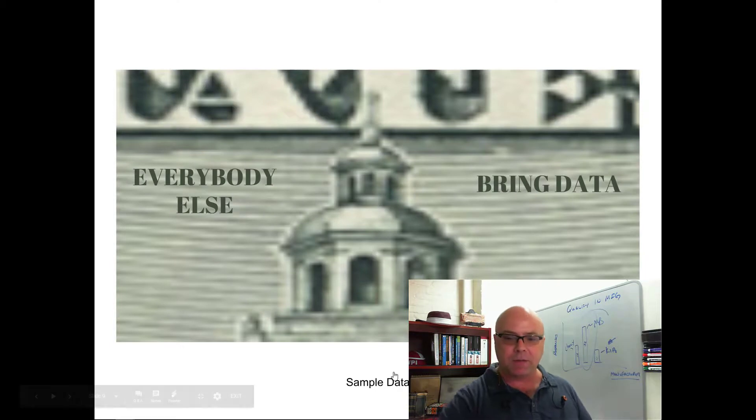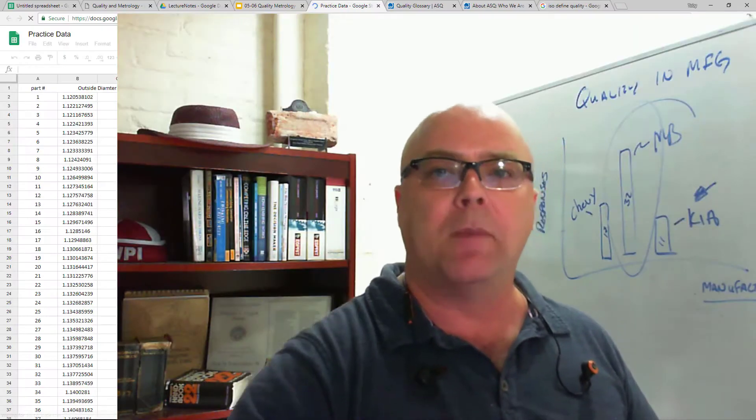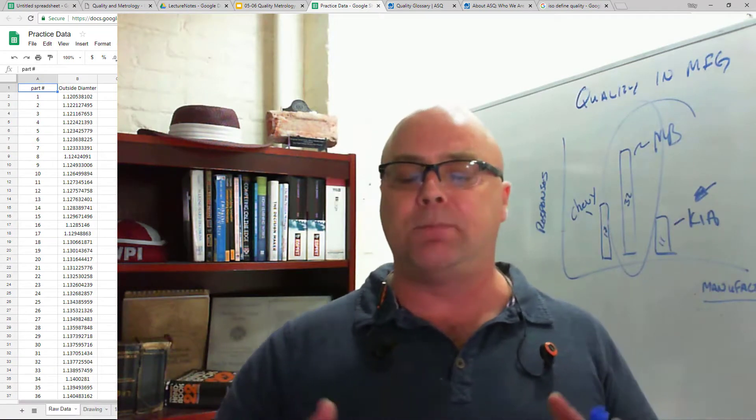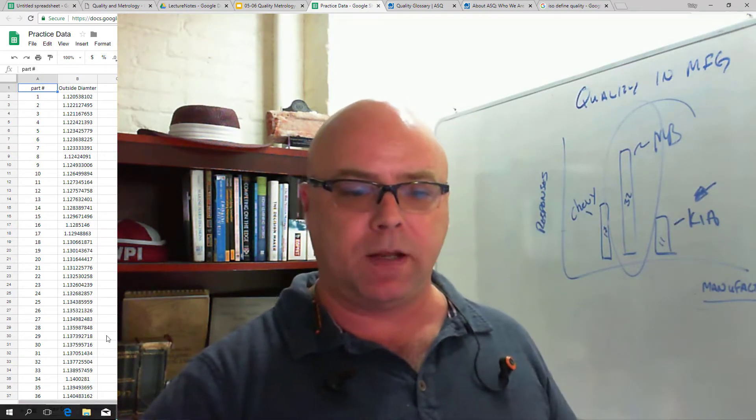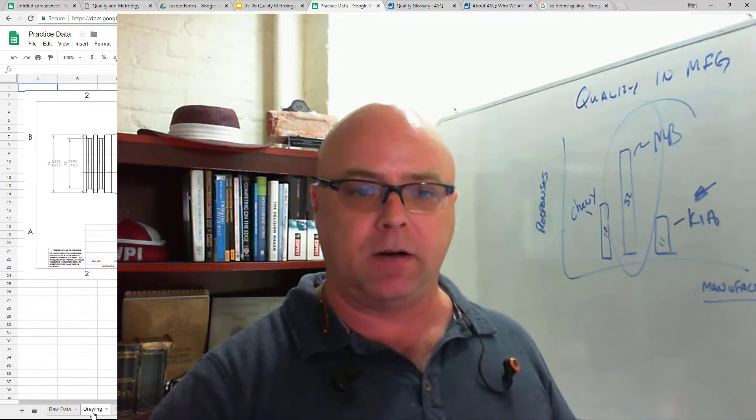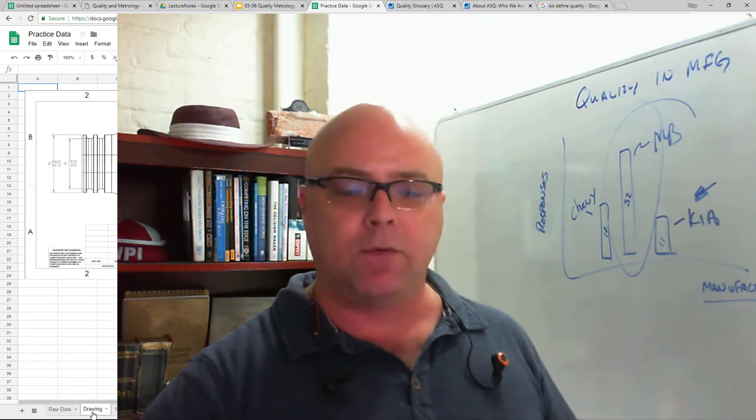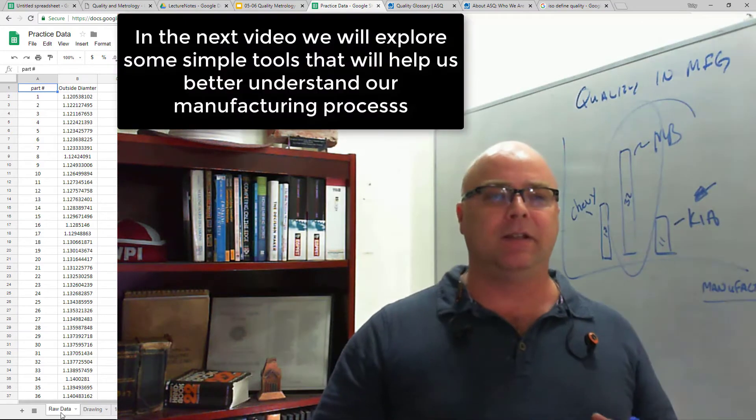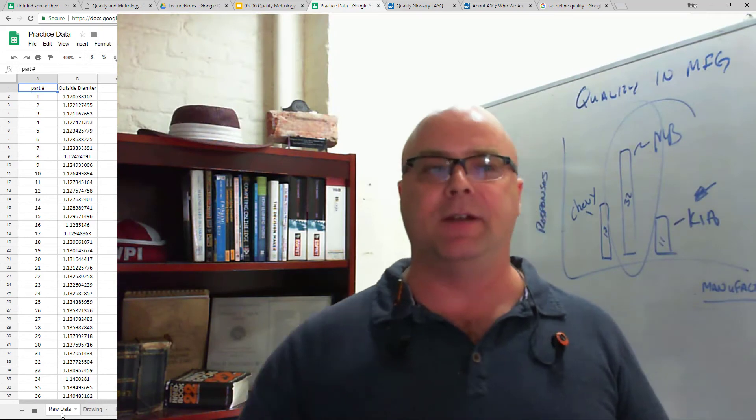And so what we've got here is we've actually got some sample data from a run of parts where we were making these parts to conform with that drawing. So the drawing is on the next page over here and I've got all this stuff grouped together for you. But we've got some sample data and what I'd like to do is talk about what do we do with the data once we have it.